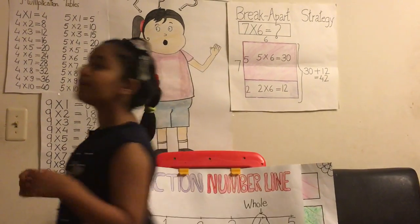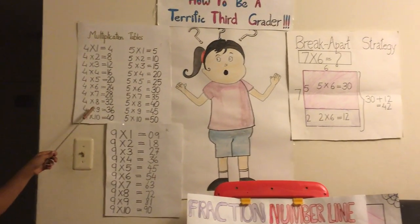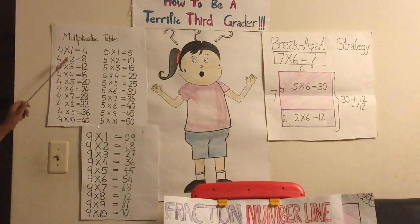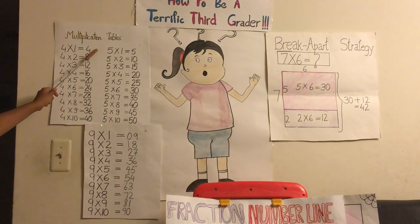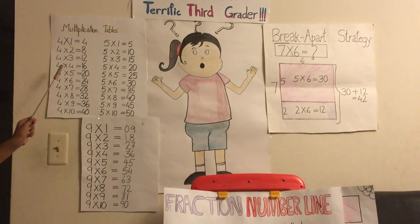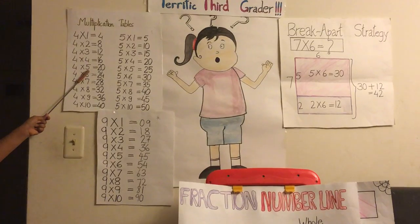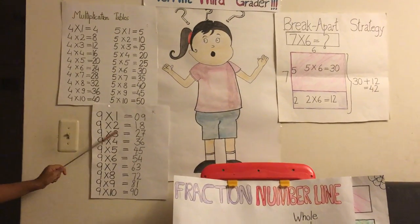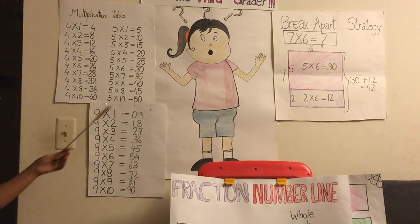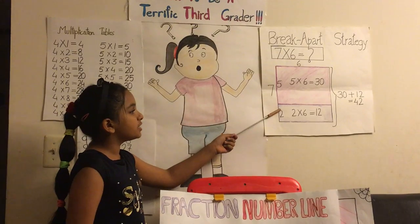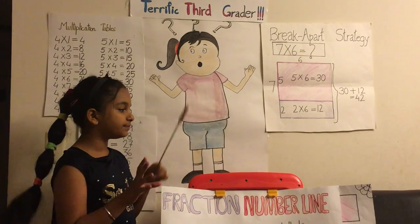And tip number three — a really important part of third grade math — multiplication and division strategies. That was to memorize your multiplication tables, a sweet trick to memorize the table of nine, and the break apart strategy to help us with all of our tables.